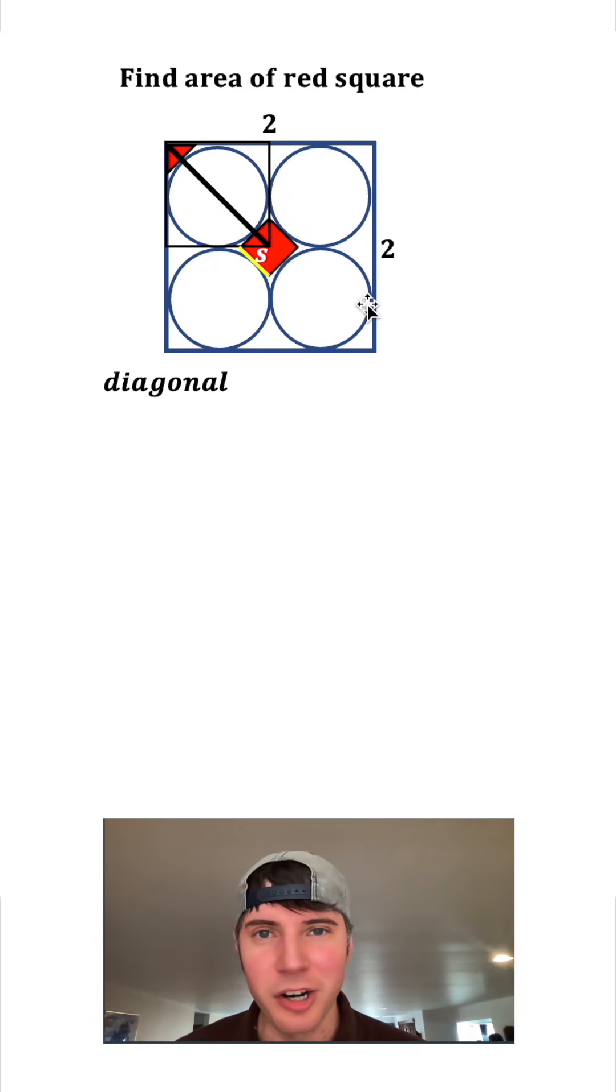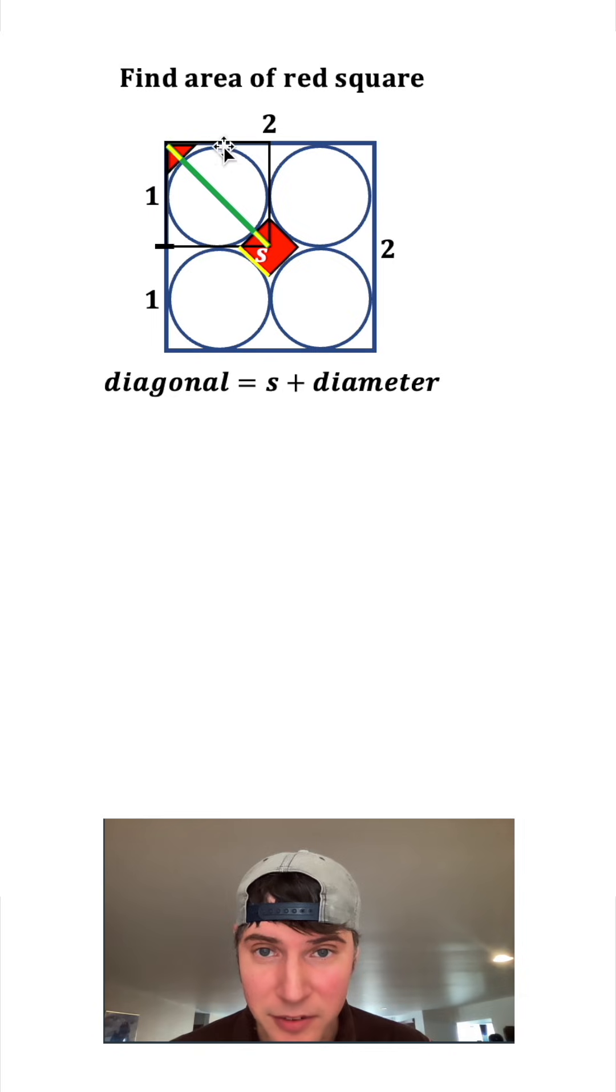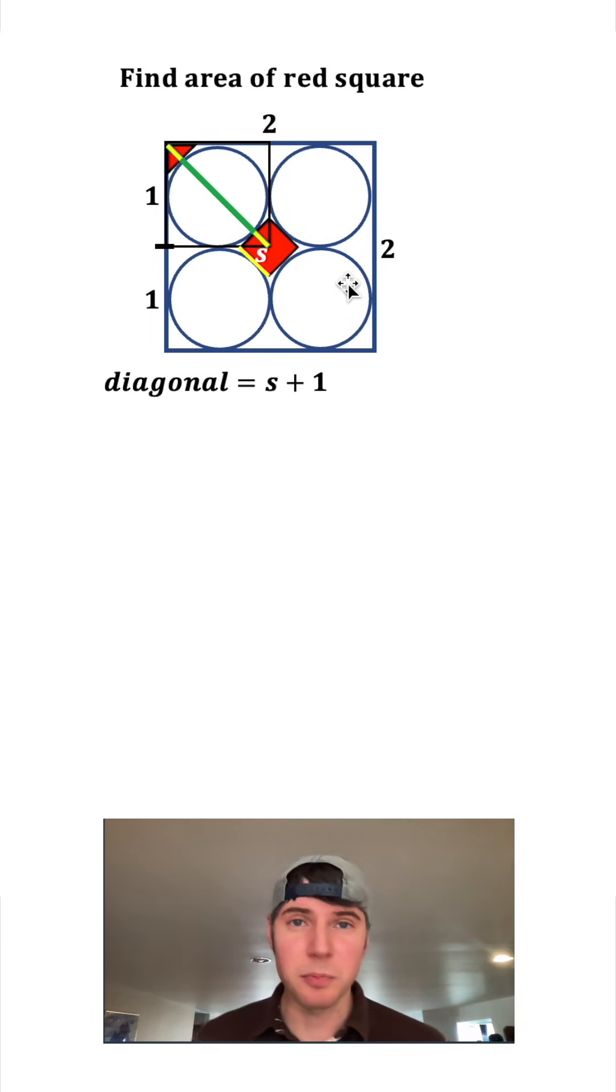It's going to be comprised of s plus the diameter of one of these circles. How long is this diameter of this circle? Well, if we cut this side in half, each of these halves is equal to one, and that half is the same height as one of the diameters. So we can call this diameter one, so the diagonal of the square is equal to s plus one.